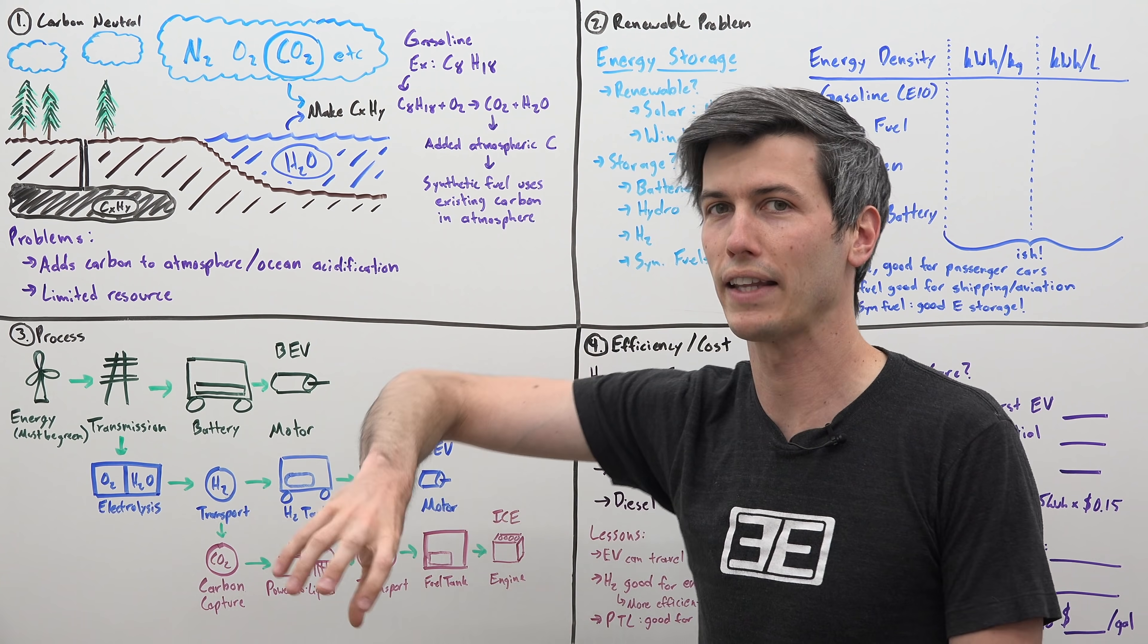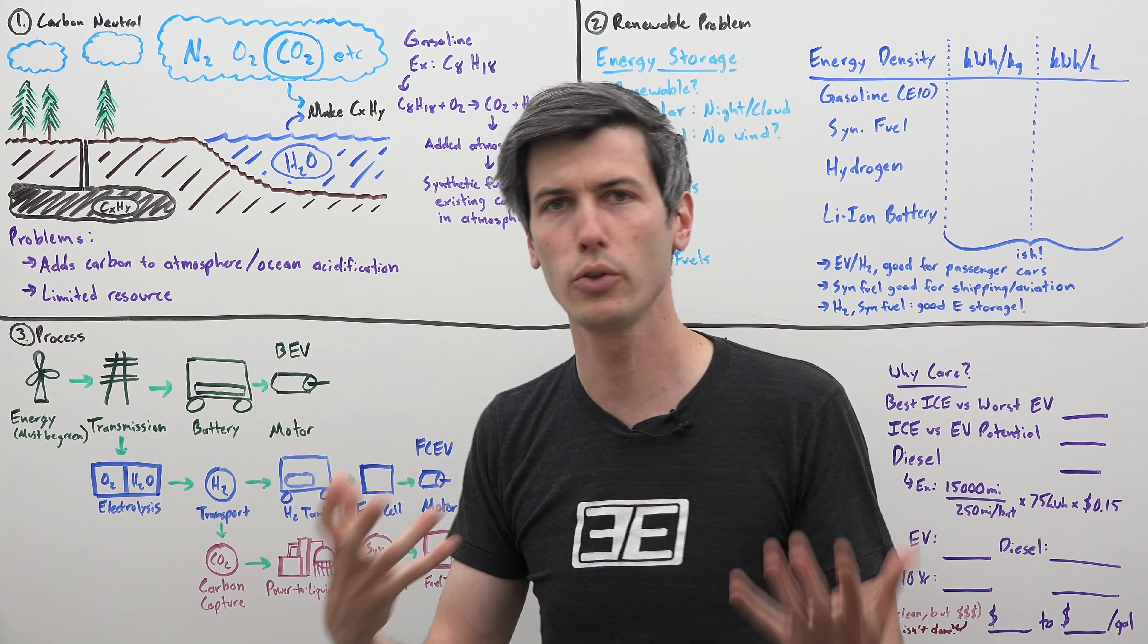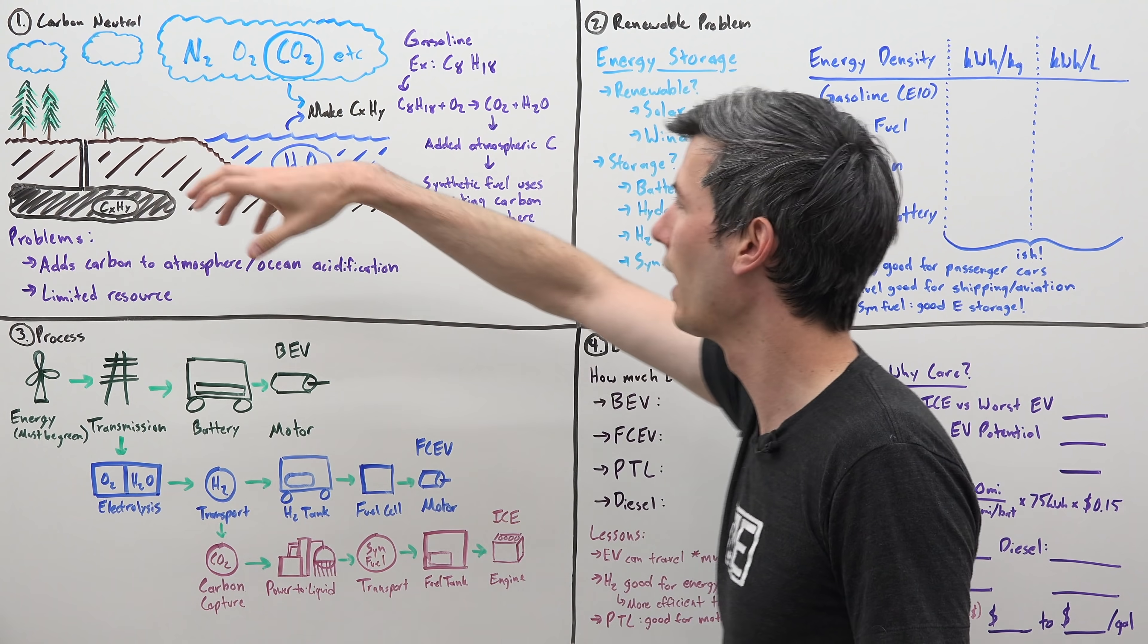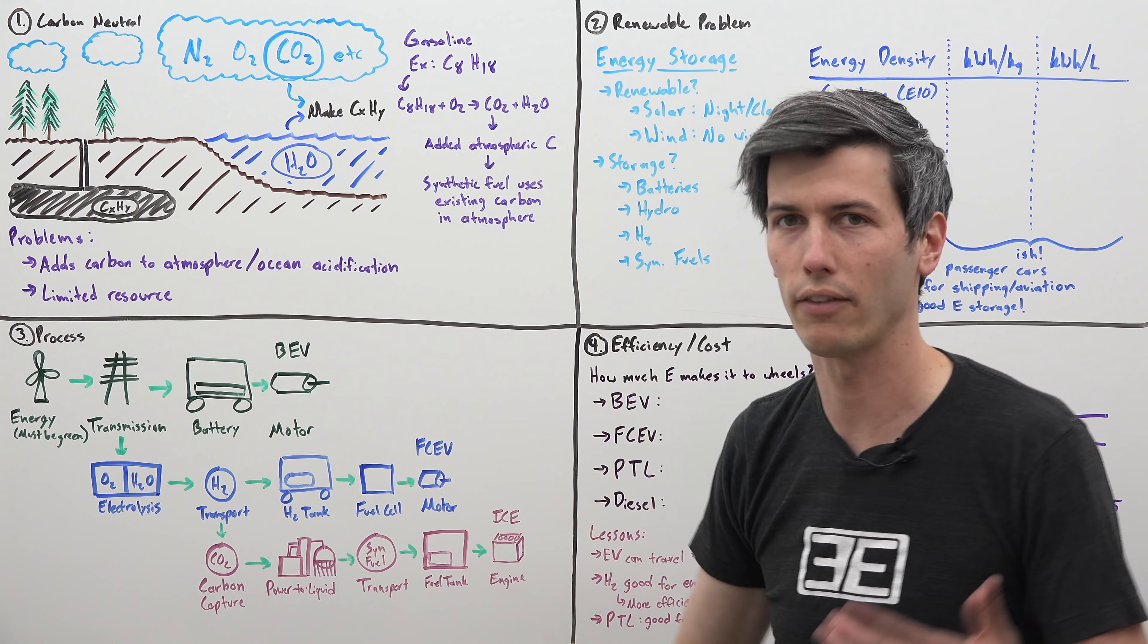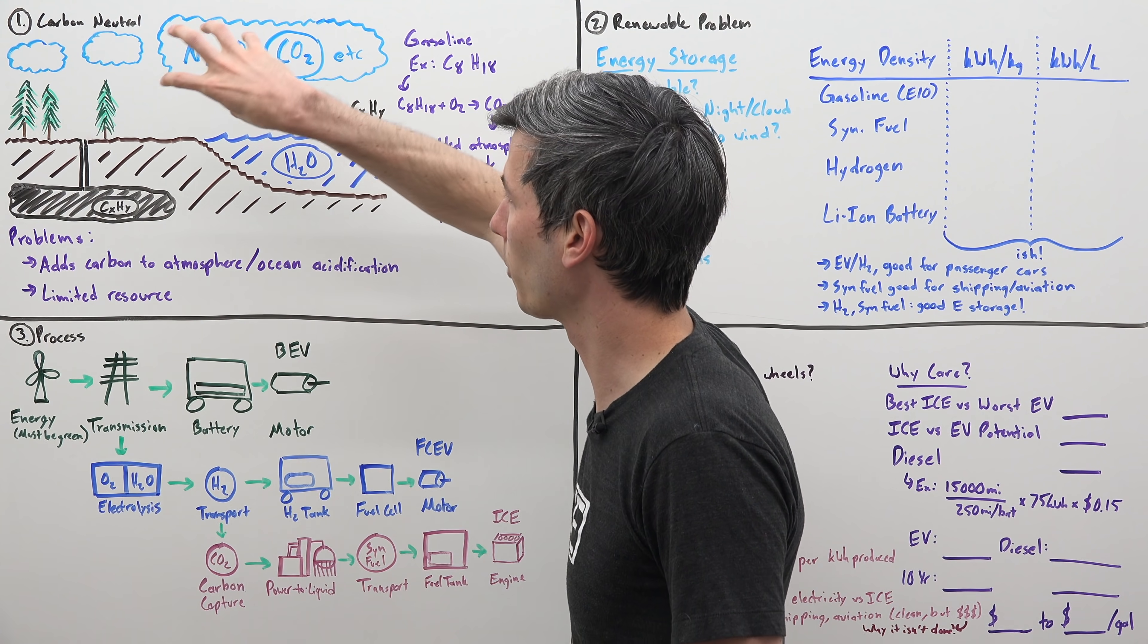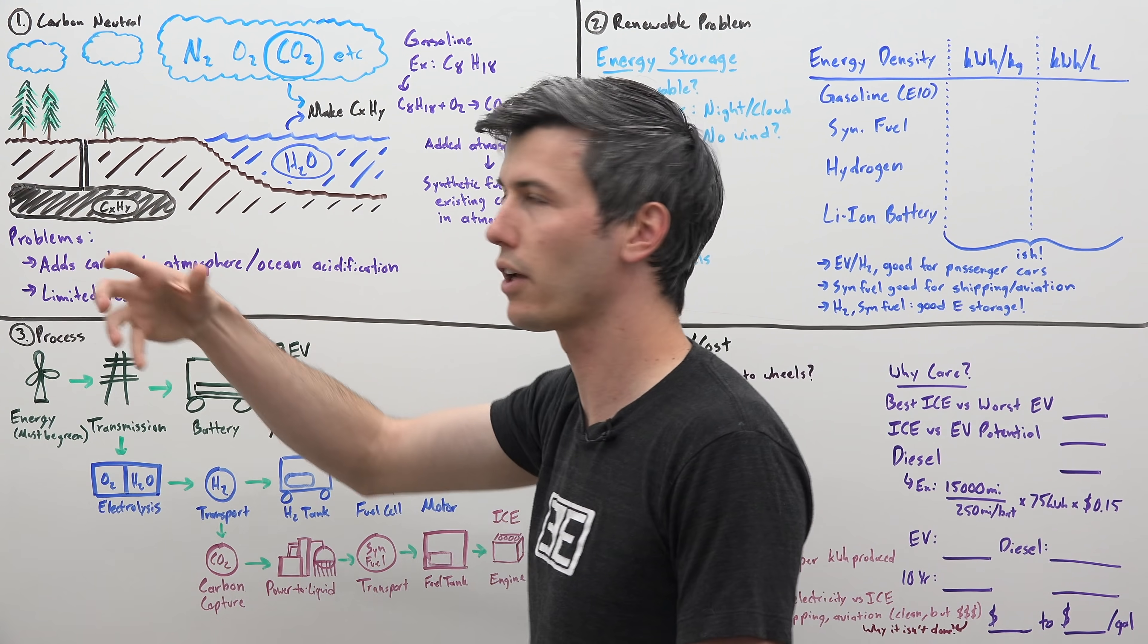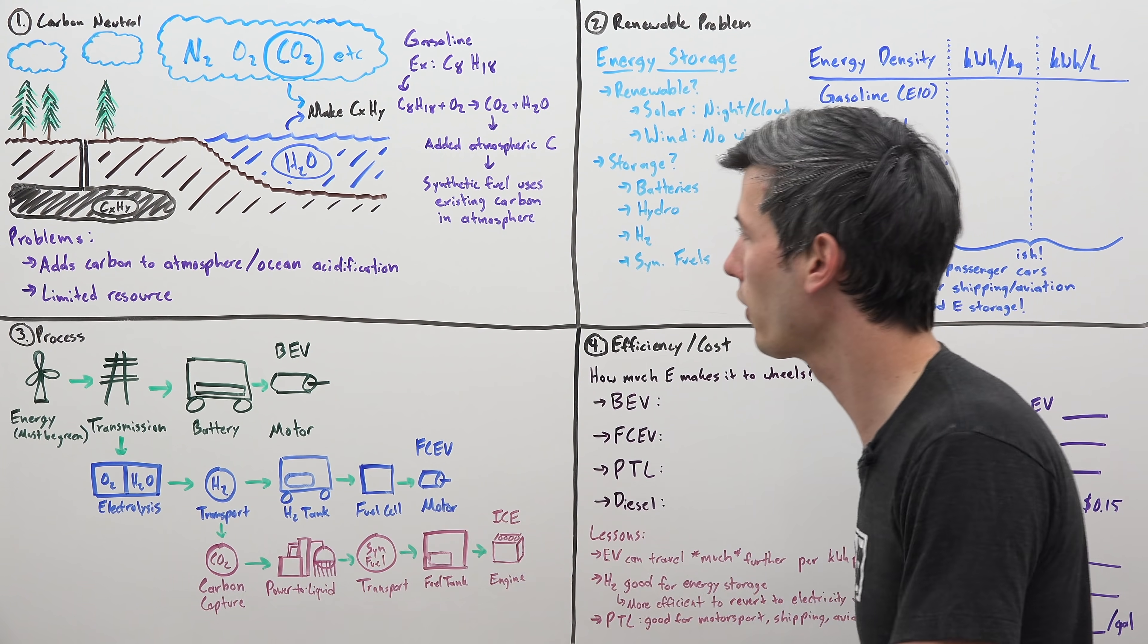Instead of doing that, synthetic fuels say, why don't we make a carbon neutral fuel? You take the CO2 that already exists in the atmosphere, you take some hydrogen that already exists above the Earth's surface, and you combine that to make hydrocarbons. Since you're pulling carbon from above the Earth's surface, you're not changing that amount of carbon in the atmosphere because you're just taking from it and then putting it back through combustion. So it's carbon neutral.